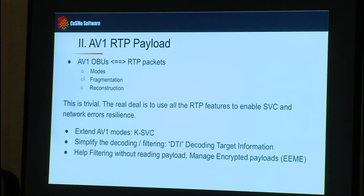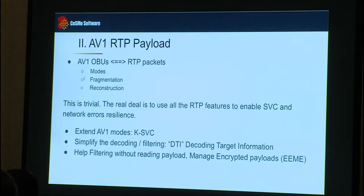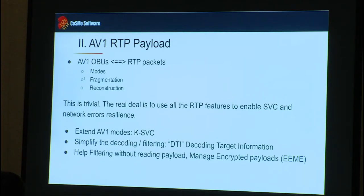We still didn't have SVC, and SVC is difficult. For the real-time part, there is the RTP layer. The easy part is fragmentation: there are 28 different modes in the AV1 bitstream codec. You need to support those modes, recognize them, and decide if an OBU is too big and should be fragmented into an RTP packet. On reception, you unpack the bitstream and reconstruct it in a format compliant for the decoder. This part is trivial — it's just chunking, done for a long time. What's difficult is using RTP features to enable SVC, NAK, FEC, and all those things.